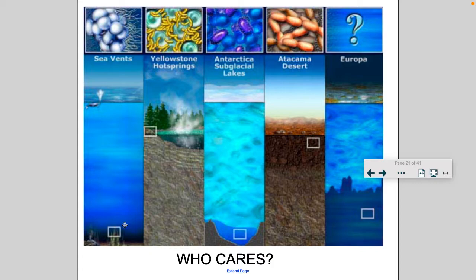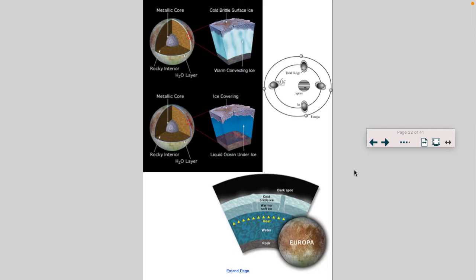Now, why is this important? Who cares that we can find organisms at the bottom of the seafloor, in a hot spring in Yellowstone, underneath a subglacial lake in Antarctica, or even in a hot arid desert? Well, it does matter, because this is life. There are places outside of Earth, somewhere else in the universe, that have these identical conditions, and there could be life there. One case where we think life might exist is a moon of Jupiter called Europa.